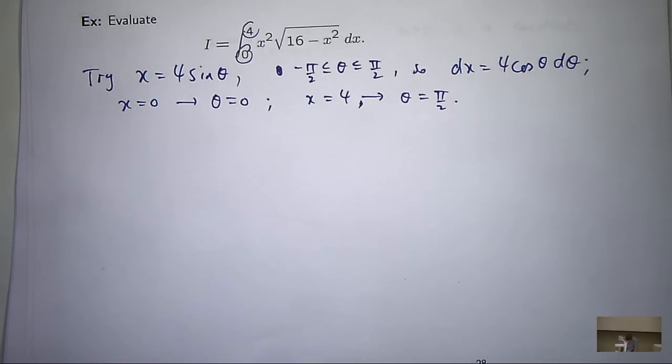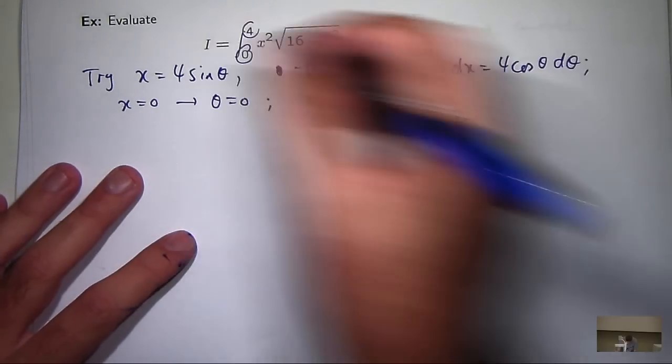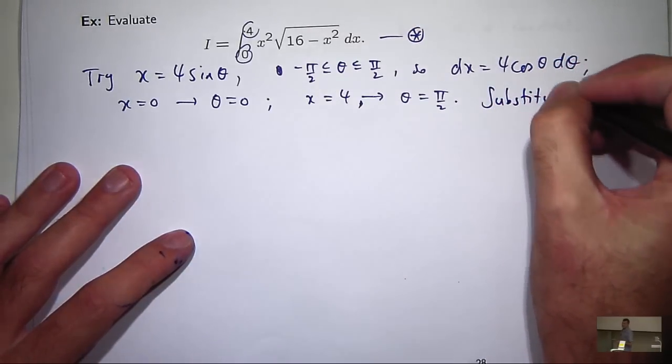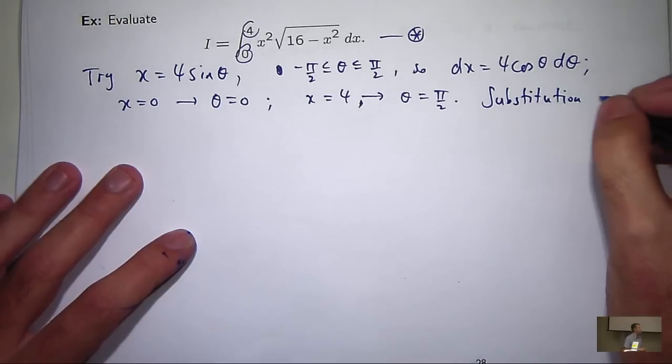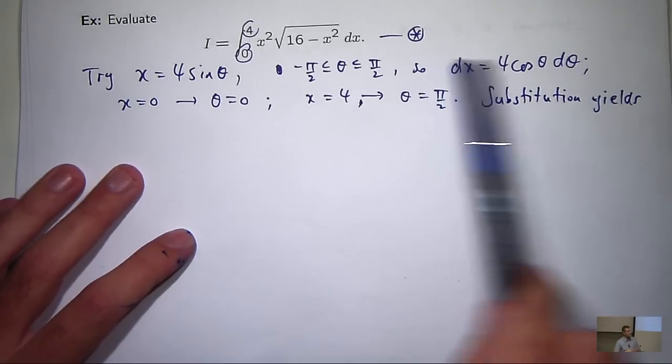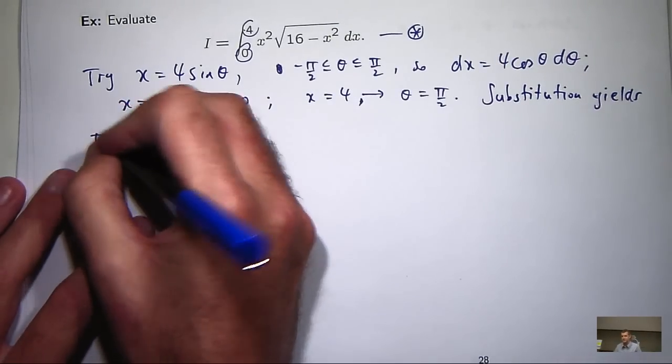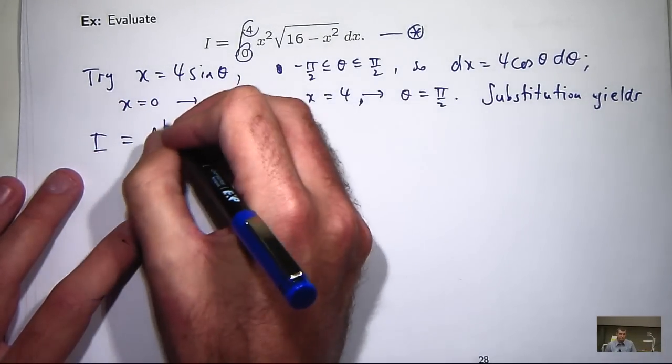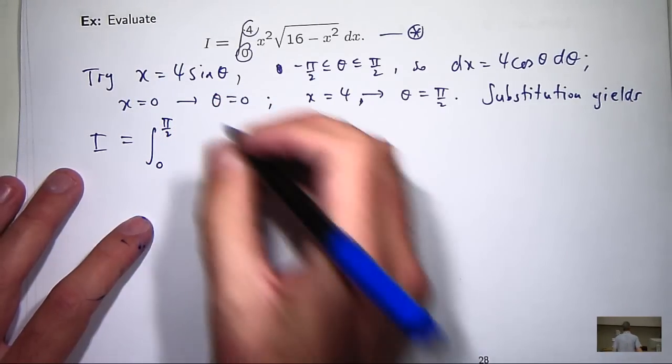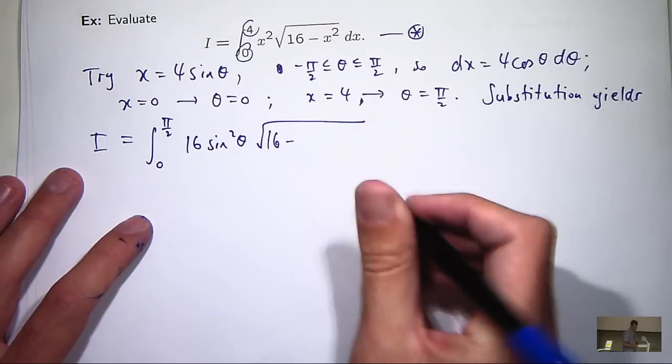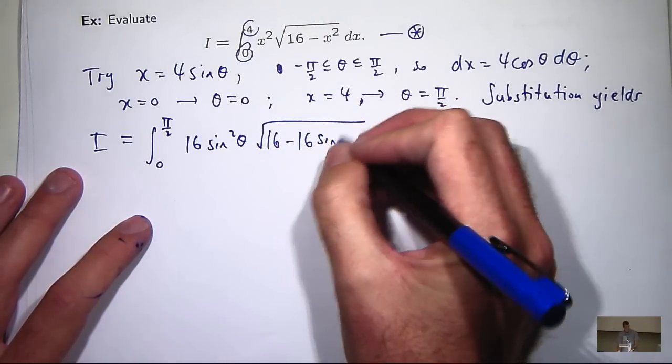So we've got all the elements now to make our substitution. Hopefully, it's going to be simpler. So let's call this star. So we replace dx with this, x with this, and the limits of integration. So we're going to get 16 sine squared theta times root of 16 minus 16 sine squared theta times 4 cos theta d theta.